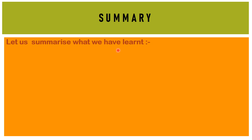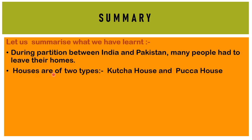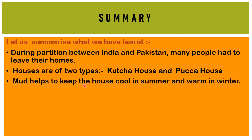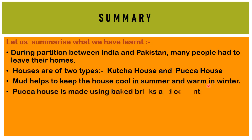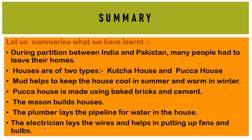Let us summarize what we have learned. During partition between India and Pakistan, many people had to leave their homes. Houses are of two types: kachcha and pakka. Mud helps keep the house cool in summer and warm in winter. Pakka houses are made using big bricks and cement. The mason builds the house, the plumber lays the pipeline for water, and the electrician lays the wires and helps put up fans and bulbs. I hope you understood what we are going to learn in this chapter. Thank you.